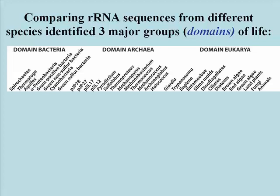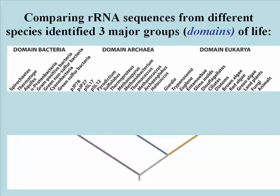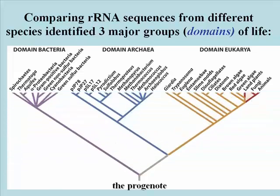Using computers to pick the shortest possible pathways by which base differences between the RNA in these species could have occurred — that is to say, pathways which involve the least number of base changes to get from one species to the next — it's actually possible to infer a common ancestry of related species, and ultimately of all existing species.